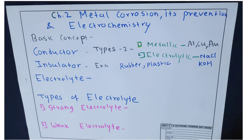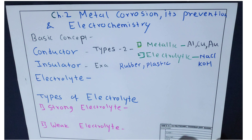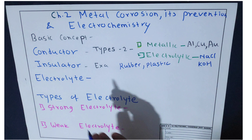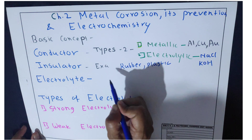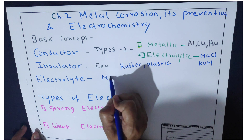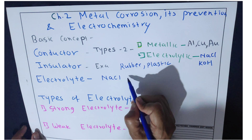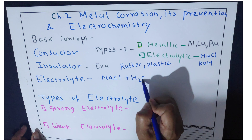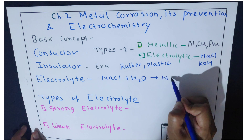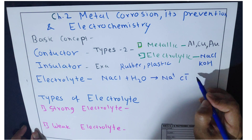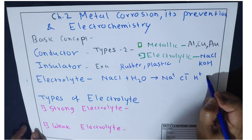Next, electrolyte. An electrolyte is a substance which in aqueous solution or fused state liberates ions and allows electric current to pass through it, resulting in chemical decomposition of that substance. For example, when NaCl is dissolved in water, it forms Na⁺ and Cl⁻ ions, as well as H⁺ and OH⁻ ions.